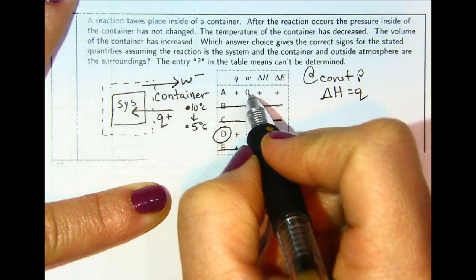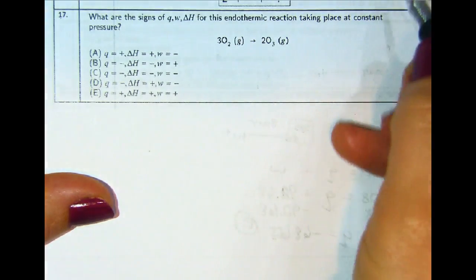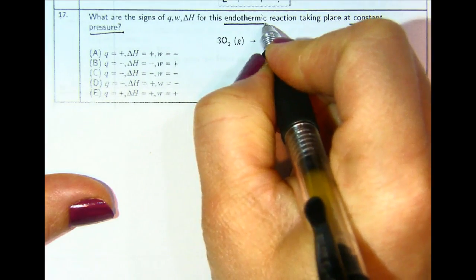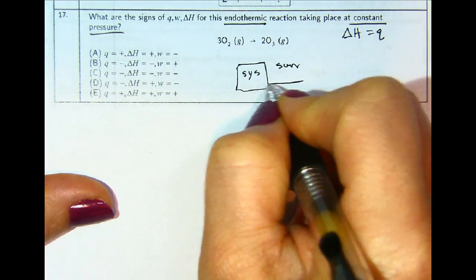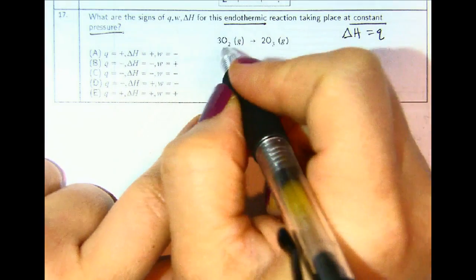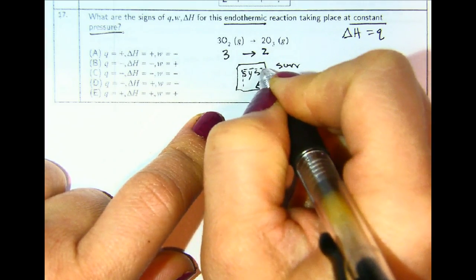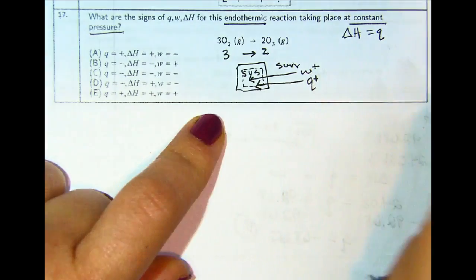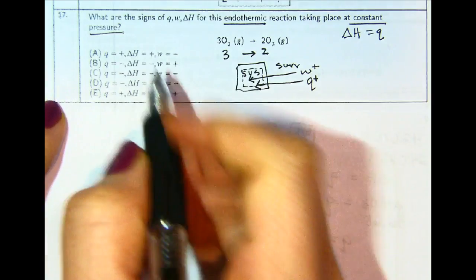Work would equal zero only if the container remained at constant volume. Number 17: what are the signs of Q, W, and delta H for an endothermic reaction at constant pressure? Constant pressure means delta H equals Q. Since it's endothermic, heat goes into the system, giving a positive Q. There are three moles of gas before and two moles after — less gas means smaller volume, so compression occurs, making W positive. We want Q, delta H, and W all positive, which is letter E.